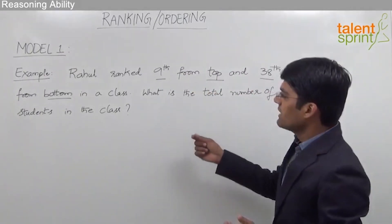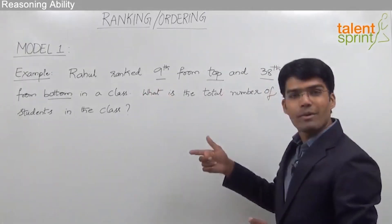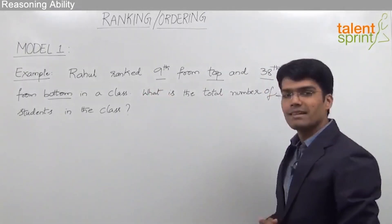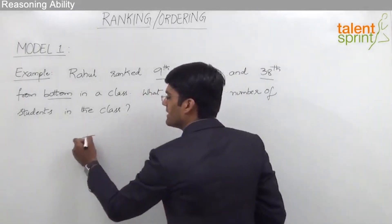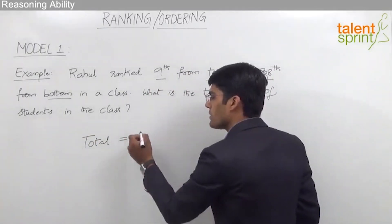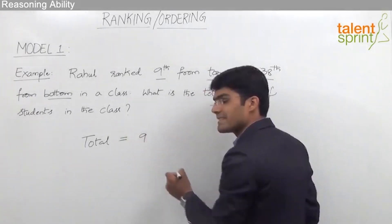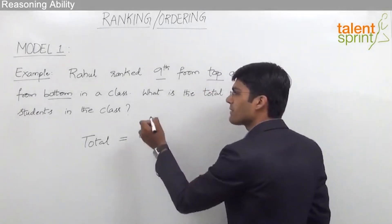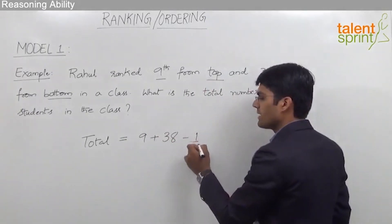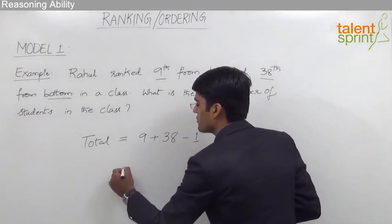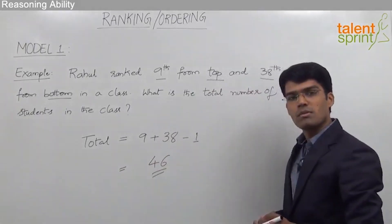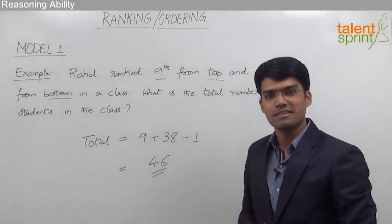As given in the question, the rank of Rahul from the top end is 9 and from the bottom end is 38. So the total number of students in the class equals the rank from top, that is 9, plus the rank from bottom, that is 38, minus 1 — which comes out to be 46. Therefore, the total number of students in the class is 46.